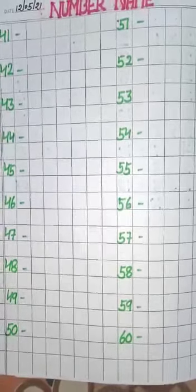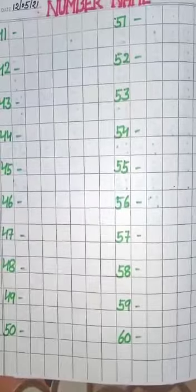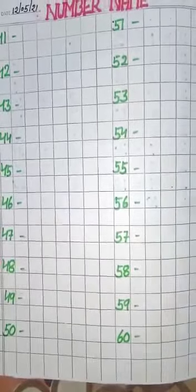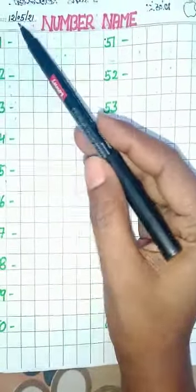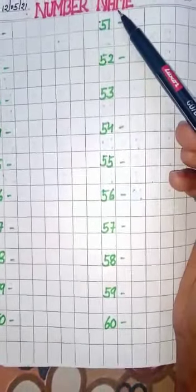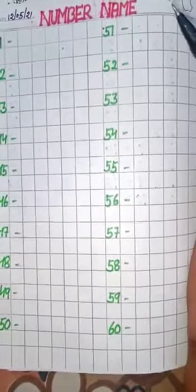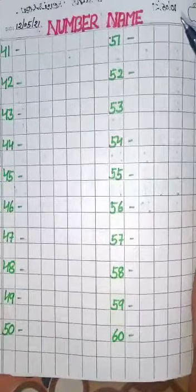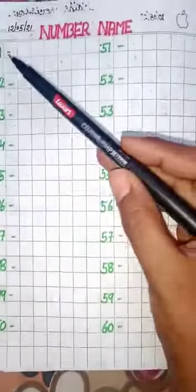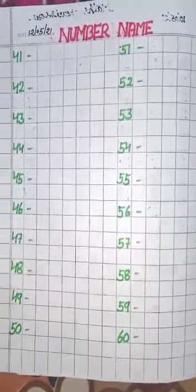Good morning kids. Today we will learn math subject. First you open your math notebook and first you mention date. And today our topic is number name. In previous class we already learned number name 1 to 40. Today we will learn 41 to 60. Now let's start.